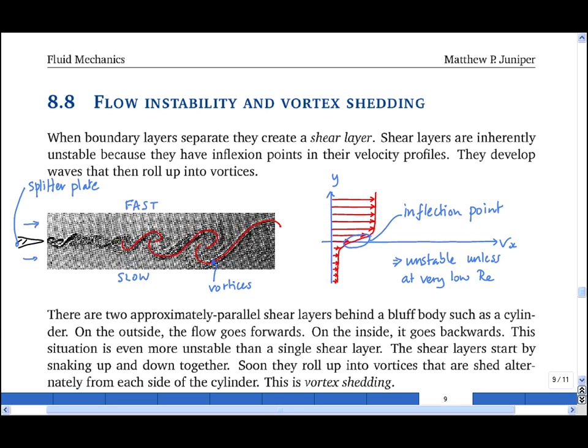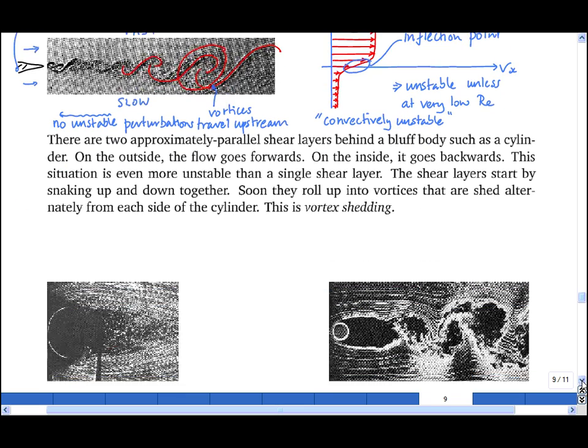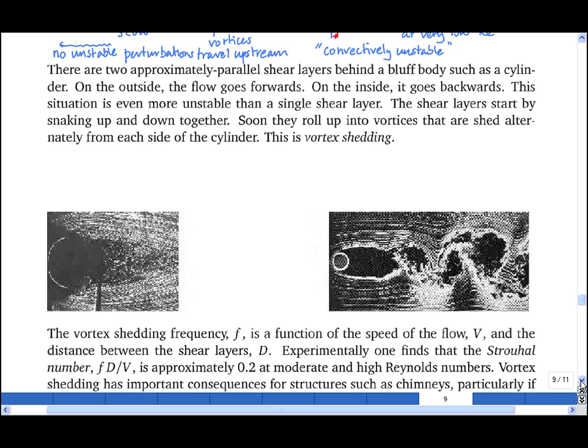And this flow here is convectively unstable, meaning that these structures grow as they convect downstream, and that no unstable perturbations can travel upstream. A shear layer between two uniform density fluids is a classic example of a convectively unstable flow.